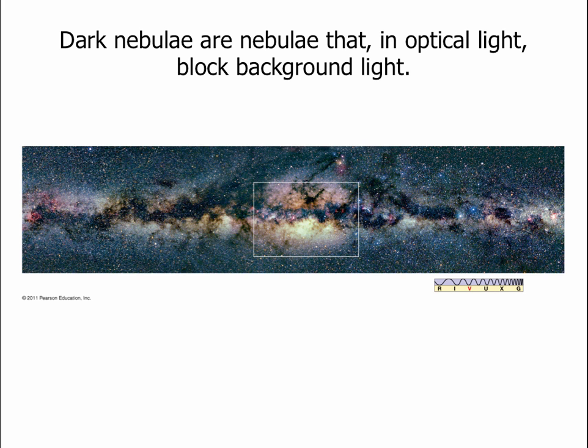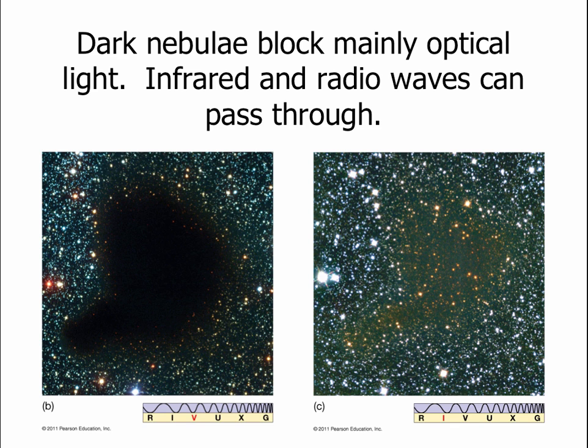The final type of nebulae we'll talk about are dark nebulae. Dark nebulae are clouds of gas and dust that, in optical light, block the background light. Here's a picture of the Milky Way, and what looks like a lack of stars in a stripe across the middle is really dust in our galaxy blocking the light of background stars. The dust in space is very good at blocking optical light, so we see these clouds as a lack of light from areas where you would expect there to be light. Dark nebulae block mostly optical light, but infrared and radio light can pass right through — so in the infrared picture you can see stars through the nebula, though you can still tell the cloud is there absorbing a little bit of light.